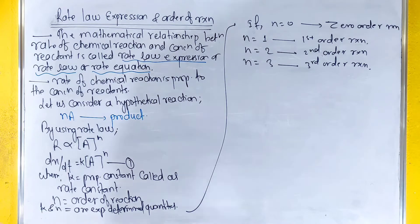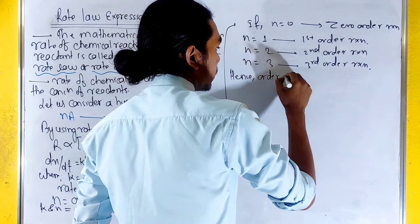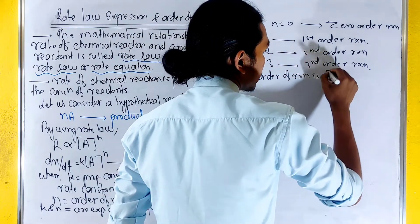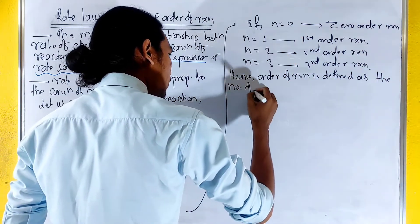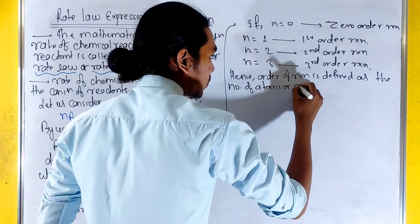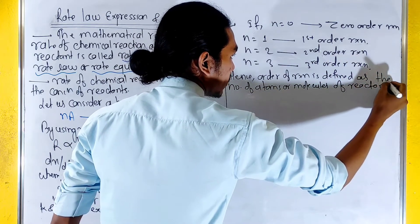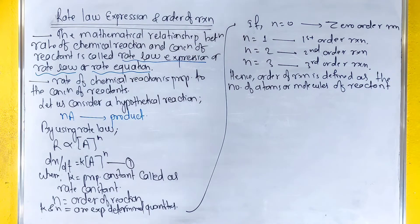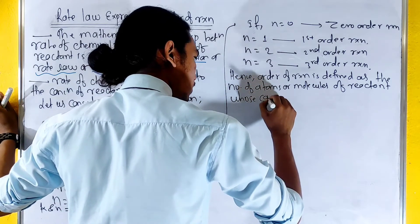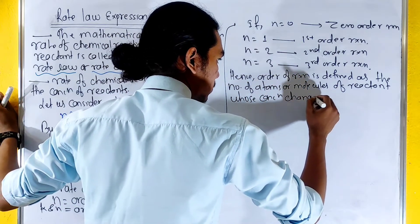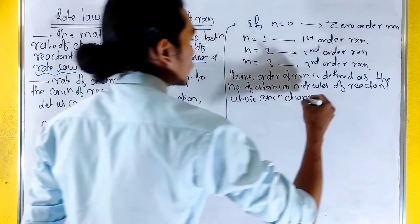Order of reaction is defined as the number of atoms or molecules of reactant whose concentration changes during the course of the reaction.